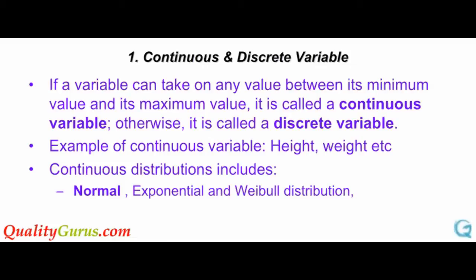Before we actually look at the normal distribution, let us quickly recollect the types of variables we discussed earlier. Continuous variables can take any value between its minimum and maximum value. Examples of the continuous variables include common things such as height, weight, etc. Common frequency distributions for continuous variables include Normal Distribution, Exponential Distribution, and Weibull Distribution.